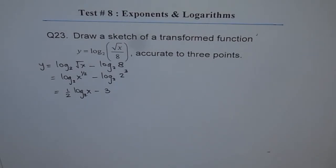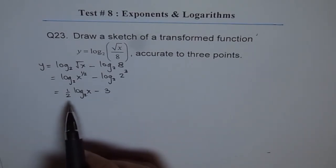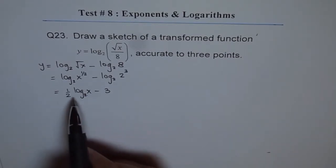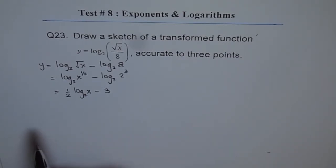And from here, you can see that the transformation is that there is vertical compression by a factor of half and vertical translation 3 units down. So that is the transformation. Now let's write down these two transformations.